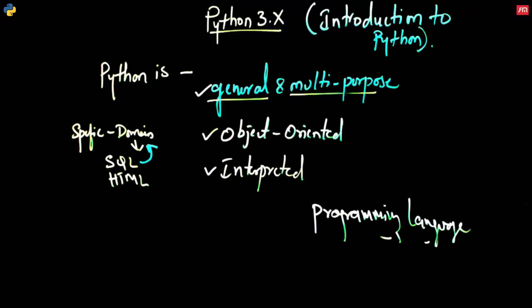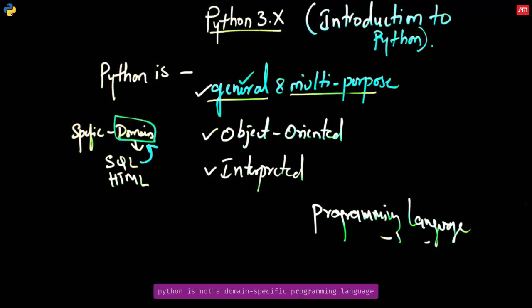Python is not a domain-specific language. Python is a general and multipurpose programming language, meaning it is not specific to a single technology or a single application domain. It can be used across multiple domains, across multiple applications, and into multiple technologies — for web applications, backend applications, or scientific and mathematical calculations. That is the reason we call it a general and multipurpose programming language.